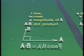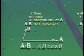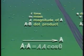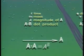If a and b are perpendicular, their dot product is zero. And the dot product of a vector with itself is just the square of its length.